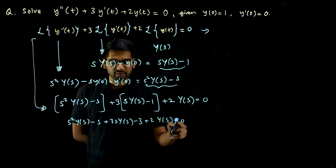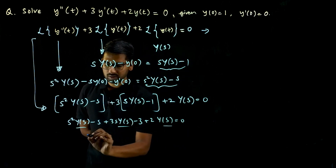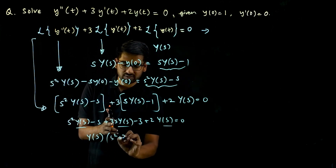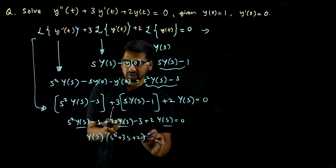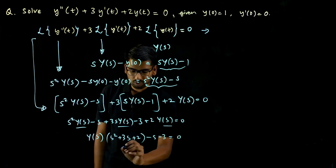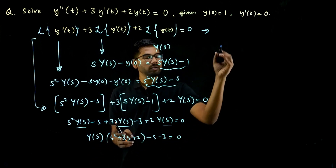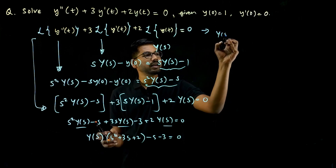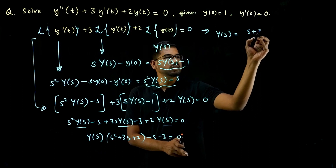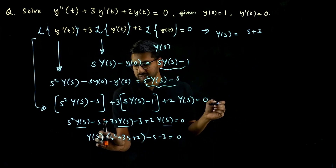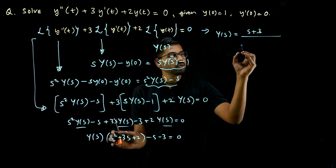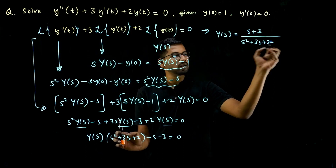Factoring out Y(s) from the equation, we get Y(s)·(S² + 3S + 2) − S − 3 = 0. Sending the remaining terms to the other side: Y(s)·(S² + 3S + 2) = S + 3, so Y(s) = (S + 3) / (S² + 3S + 2).